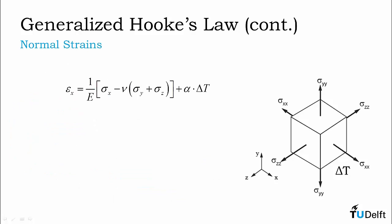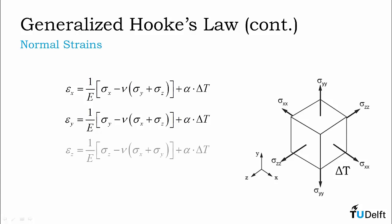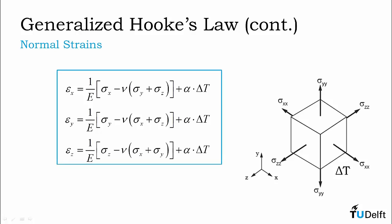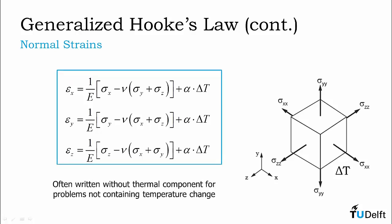If we collect the terms and simplify this equation, we get the result for the normal strain in the x-direction. If we repeat this procedure for the other two directions, we get the result for normal strain in the y-direction, and the result for the normal strain in the z-direction. Please note that the generalized Hooke's law for normal strains is often written without the thermal strain component, as many problems do not encounter a temperature change.